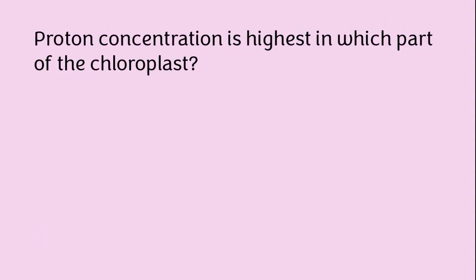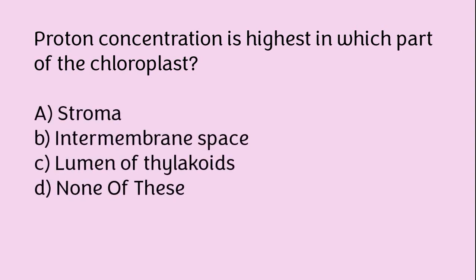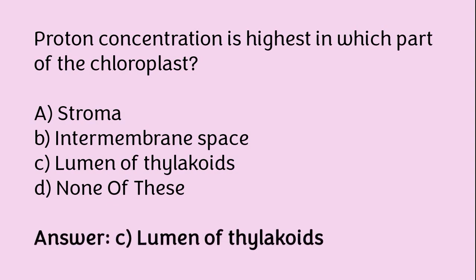Proton concentration is highest in which part of the chloroplast? Stroma, intermembrane space, lumen of thylakoids, or none of these? The correct answer is option C. Proton concentration is highest in the lumen of the thylakoids part of the chloroplast.